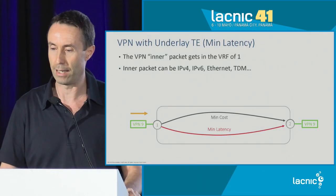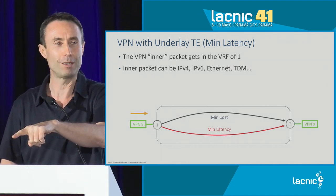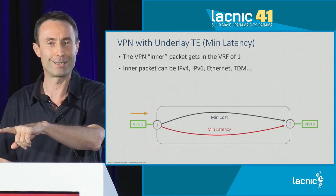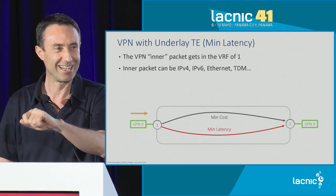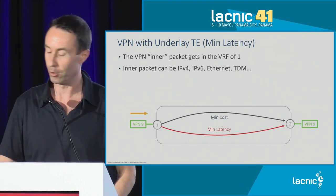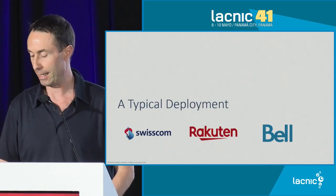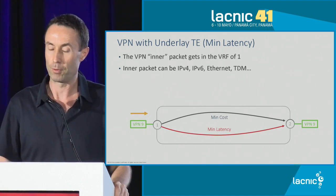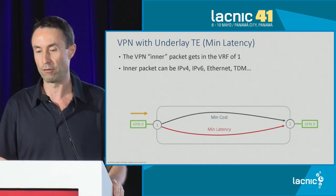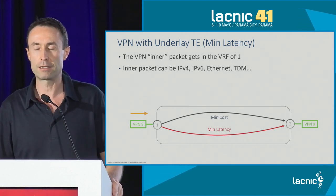I'm going to use a typical deployment as documented publicly by Swisscom, Rakuten, or Bell. The design I go over is the one typical of Swisscom, Rakuten, Bell, et cetera. So let me take an example: you want to provide a VPN with underlay TE differentiation — mean latency instead of the best effort path.